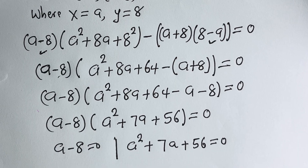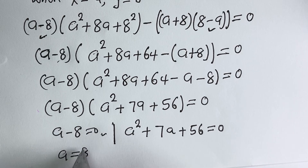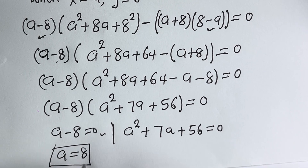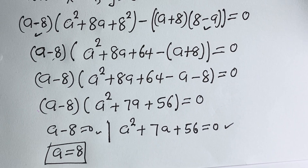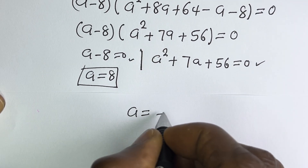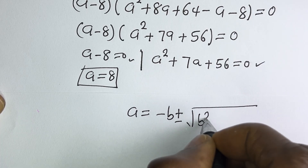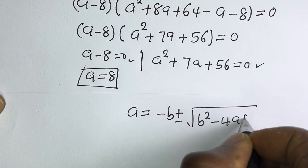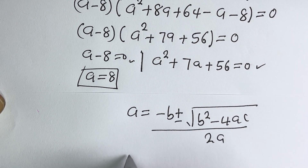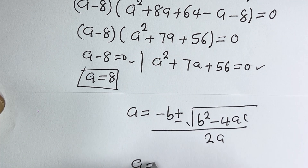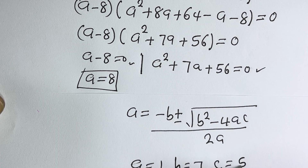From the first case, A is equal to 8. This is the real value of A. The second case is a quadratic equation. Using the quadratic formula, A equals minus b plus or minus square root of b² minus 4ac, all over 2a. From this equation, a=1, b=7, c=56.